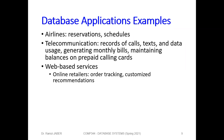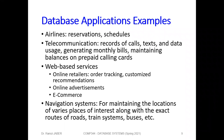For web-based services like online retailers: order tracking, customized recommendations, online advertisement, and e-commerce like Alibaba, AliExpress, Amazon, and eBay — they all have big databases. Also Google's navigation system — Google Maps — for maintaining locations of various places of interest along with routes, roads, train systems, and buses.